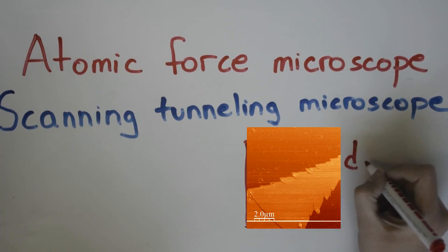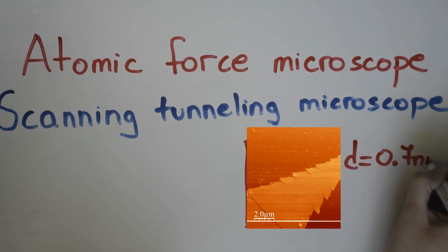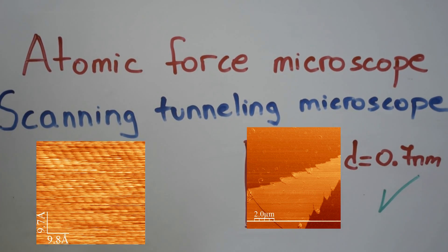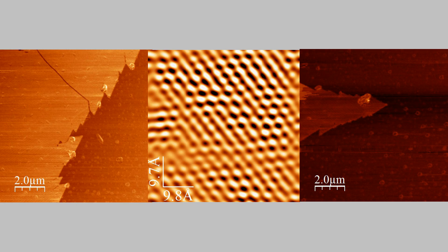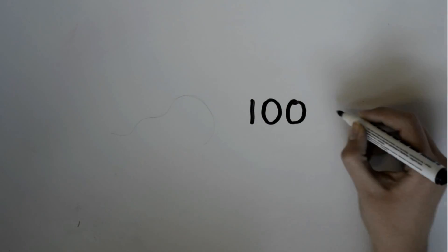The difference between them is that the STM can only observe conductors and can show us the atoms themselves, while with the AFM, we can see very clearly the difference between the phases of the layer and the surface. That's why we observed multiple layers of graphene with the STM and the MoS2 with the AFM.